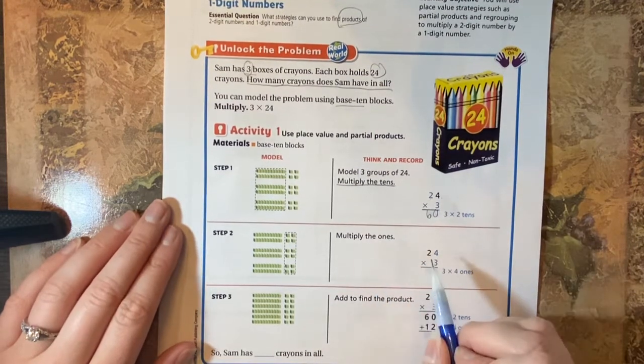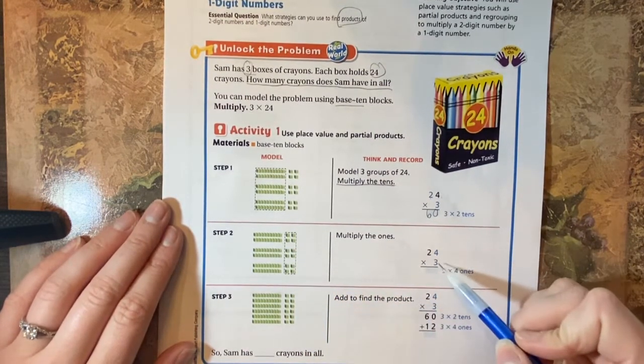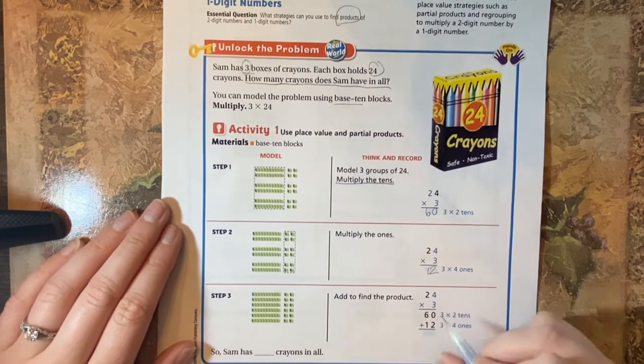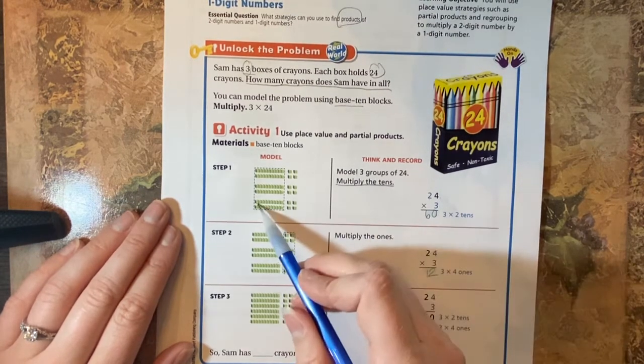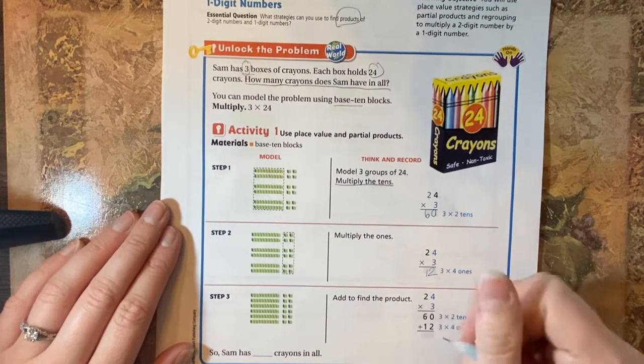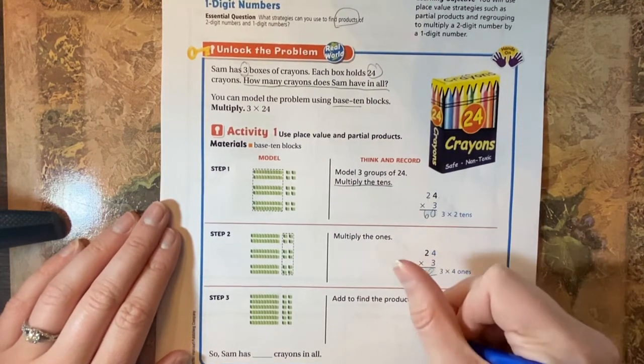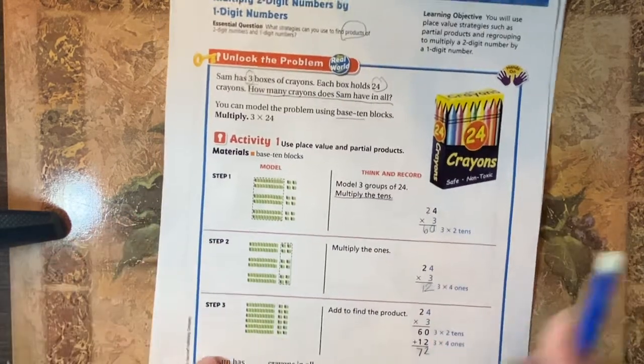So then we're going to multiply the ones. We have three groups of four. So we have four times three, which is 12. Then we come down here and we add 60 plus 12 because we had 60 and 12 here. So we add those together. Zero plus two is two, six plus one is seven. So 24 times three is 72.